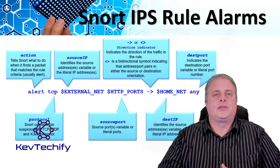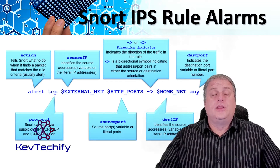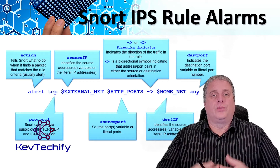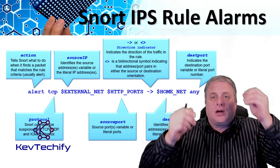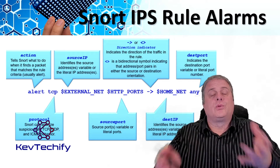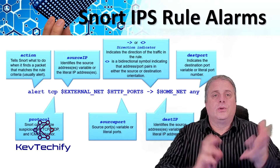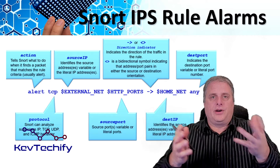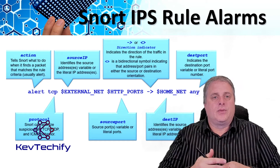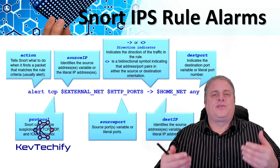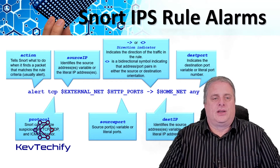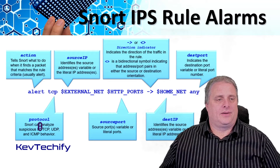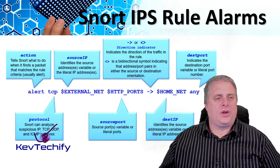In Snort IPS, signatures are configured using rules. These rules serve as the signature alarms by comparing incoming traffic to the Snort rules. Traffic matching a rule header generates an action. The rule header is conceptually similar to an access control list statement — think about your access control entries, your ACEs. It is a one-line statement that identifies malicious traffic. Here's the basic syntax of the command. The first part is the action, which tells Snort what to do.